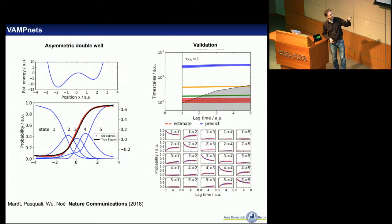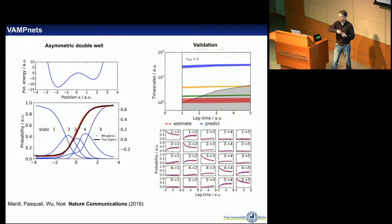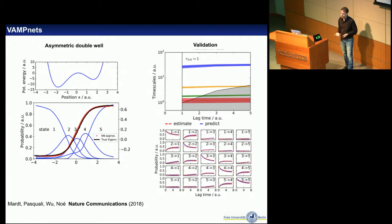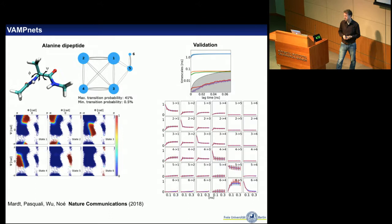In the double-well problem with five states, we find a state in the left and right wells, and several states discretizing the transition state — which is needed for a good Markov model. The implied timescales are basically completely flat, and the Chapman-Kolmogorov tests show perfect overlap between predicted relaxation curves and the data. For alanine dipeptide, we get a model with six states corresponding to free energy minima on the phi-psi plane, also with a very good Chapman-Kolmogorov test.